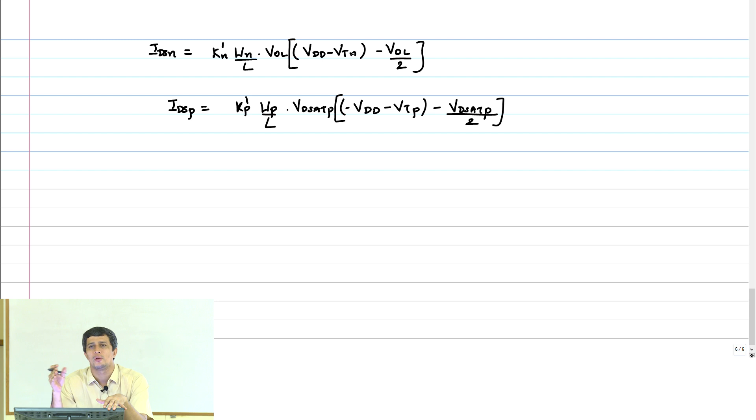This VDD minus VTN minus VOL by 2, I can approximate as VDD minus VTN. Therefore, IDSP minus IDSN implies KP prime WP by L into VDSATP into VDD plus VTP plus VDSATP by 2.